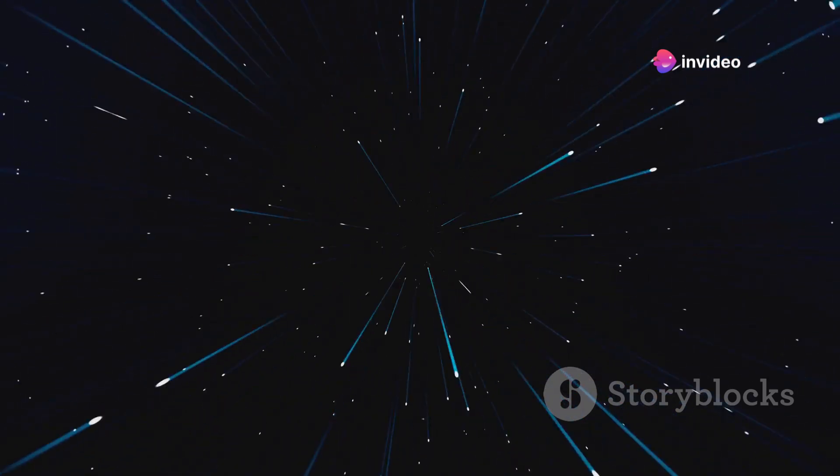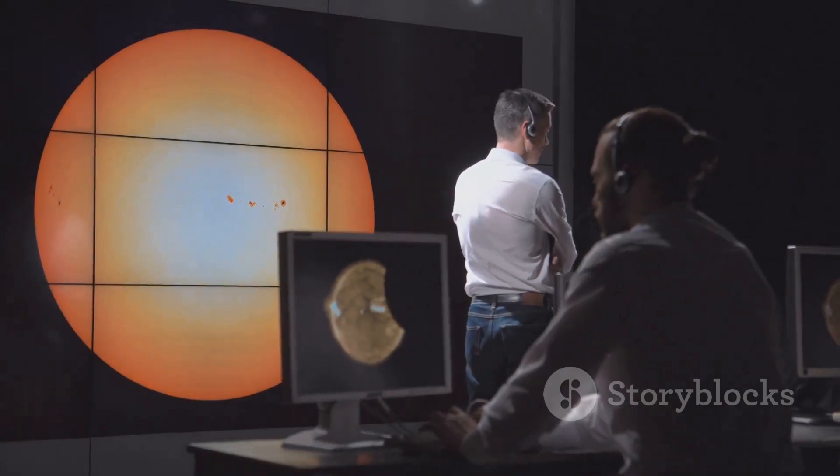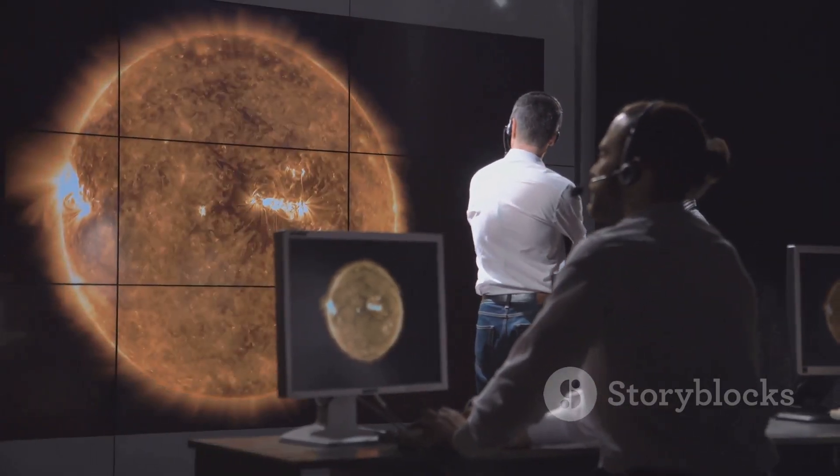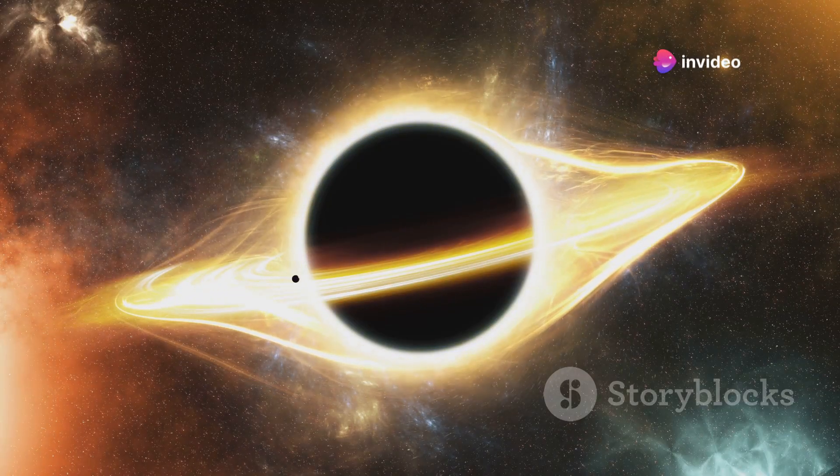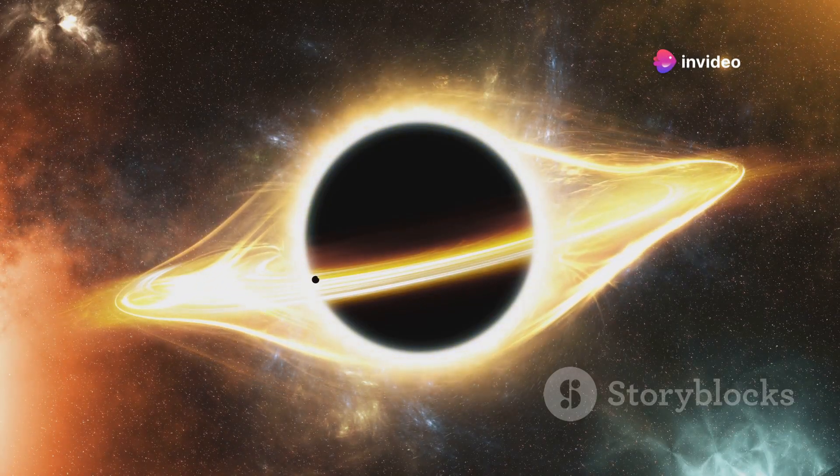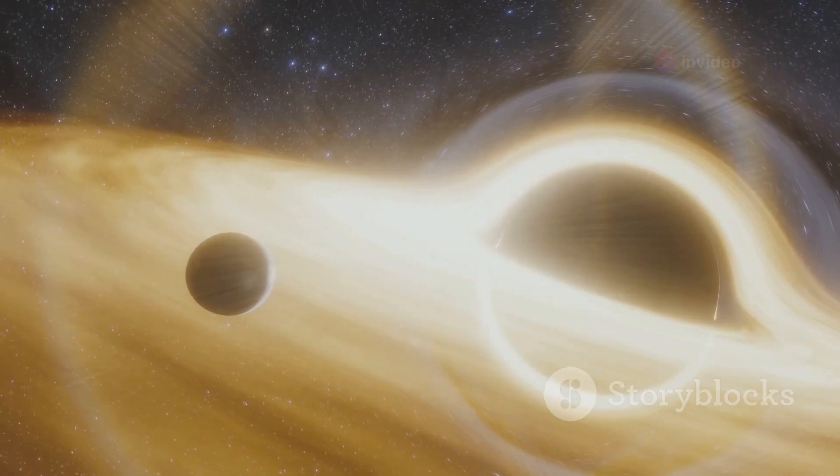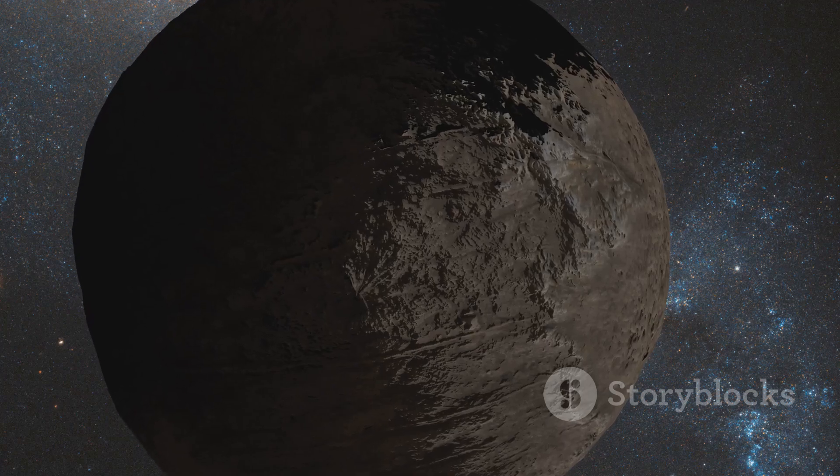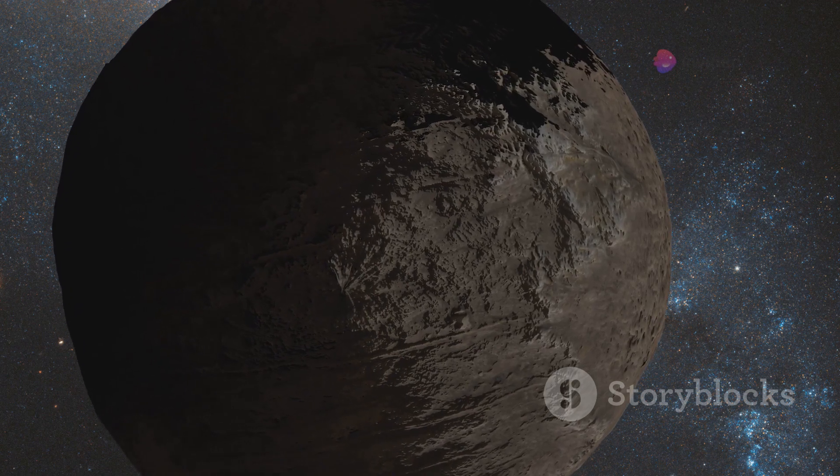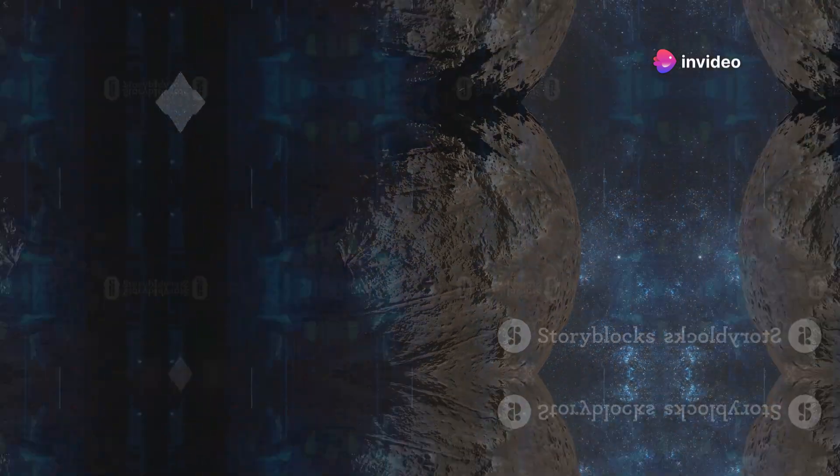While the existence of wormholes remains unconfirmed, scientists are actively searching for any signs of their presence. By studying the behavior of light and gravity around massive objects, such as black holes, astronomers hope to find subtle distortions or anomalies that could hint at the existence of these cosmic shortcuts. The search for wormholes is a testament to our insatiable curiosity and our relentless pursuit of understanding the universe and our place within it.